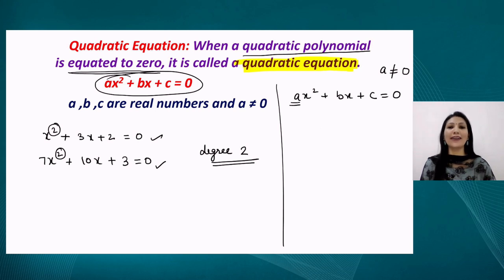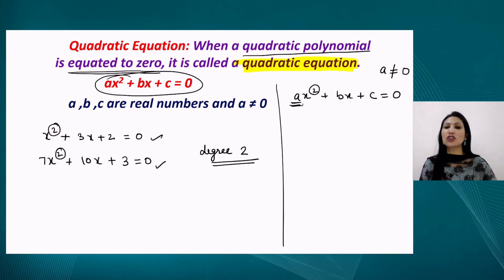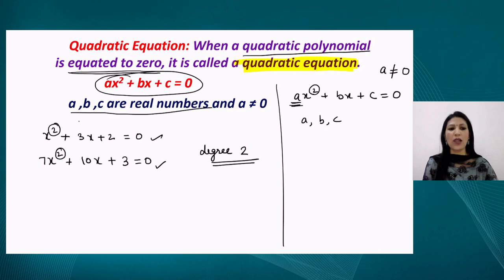There is a condition: the coefficient of x², that is 'a', should never be 0. Because if a equals 0, the x² term will be eliminated and the equation will become only linear. So for a quadratic equation, the degree must be 2, and the coefficient of x² must not be 0. Also, a, b, and c are real numbers.